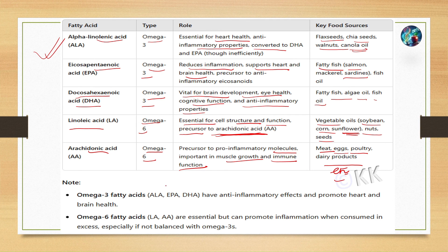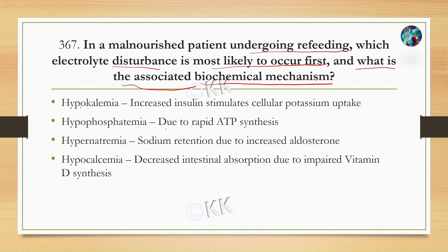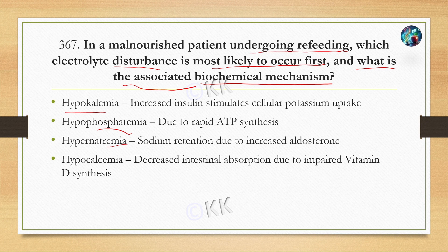In a malnourished patient undergoing refeeding, which electrolyte disturbance is most likely to occur first, and what is the associated biochemical mechanism? Option A: Hypokalemia — increased insulin stimulates cellular potassium uptake. Option B: Hypophosphatemia — due to rapid ATP synthesis. Option C: Hyponatremia — sodium retention due to increased aldosterone. Option D: Hypocalcemia — decreased intestinal absorption due to impaired Vitamin D synthesis.